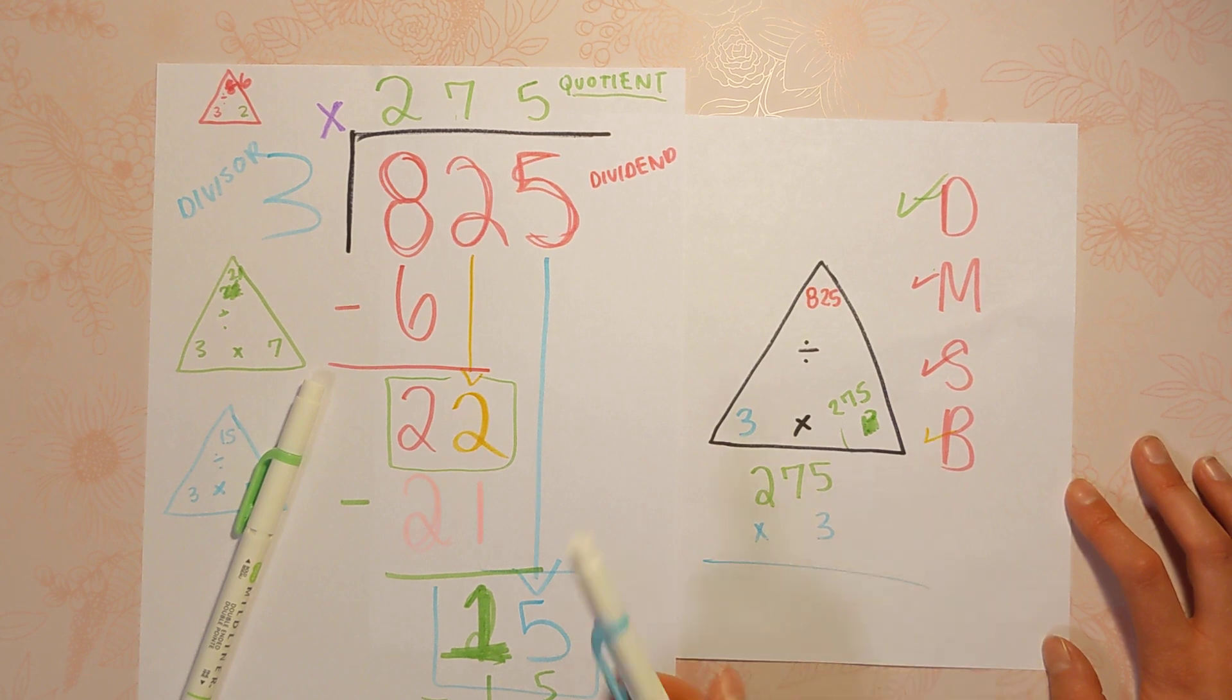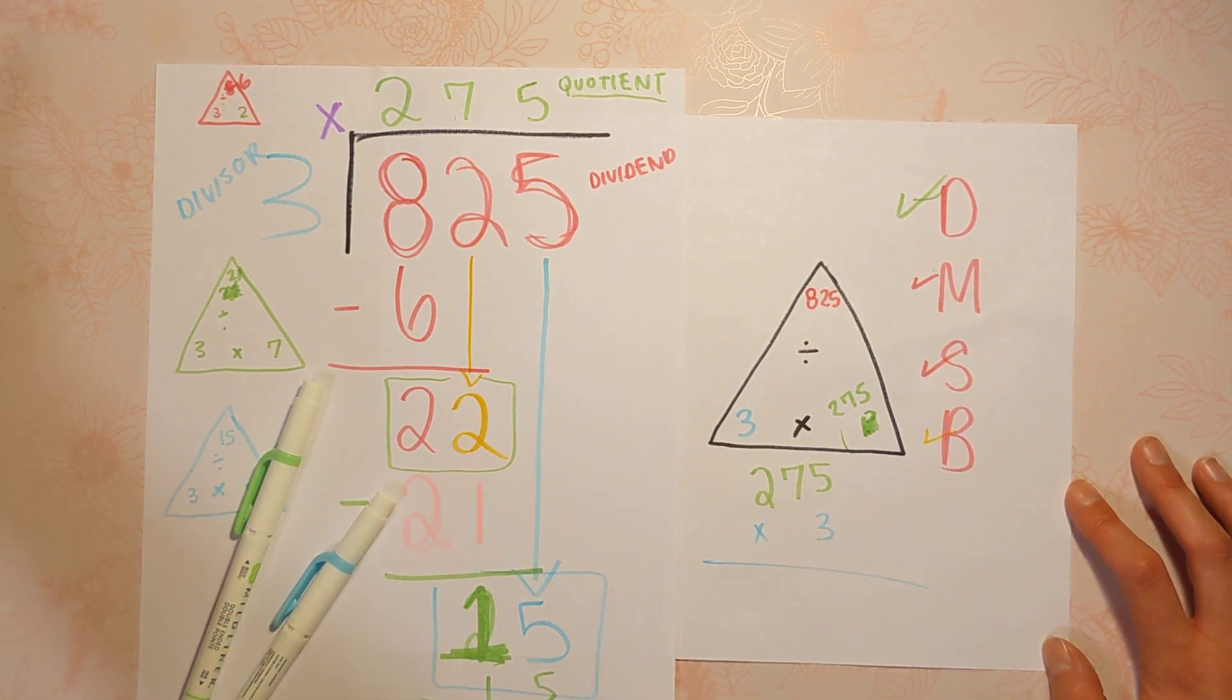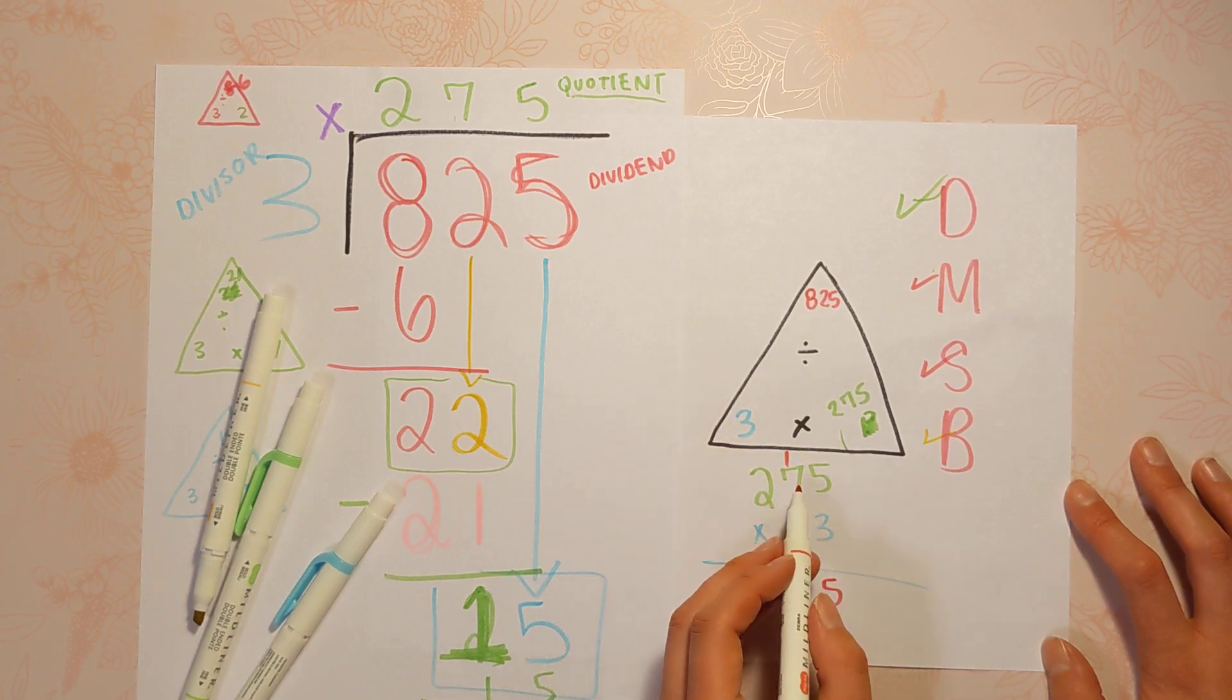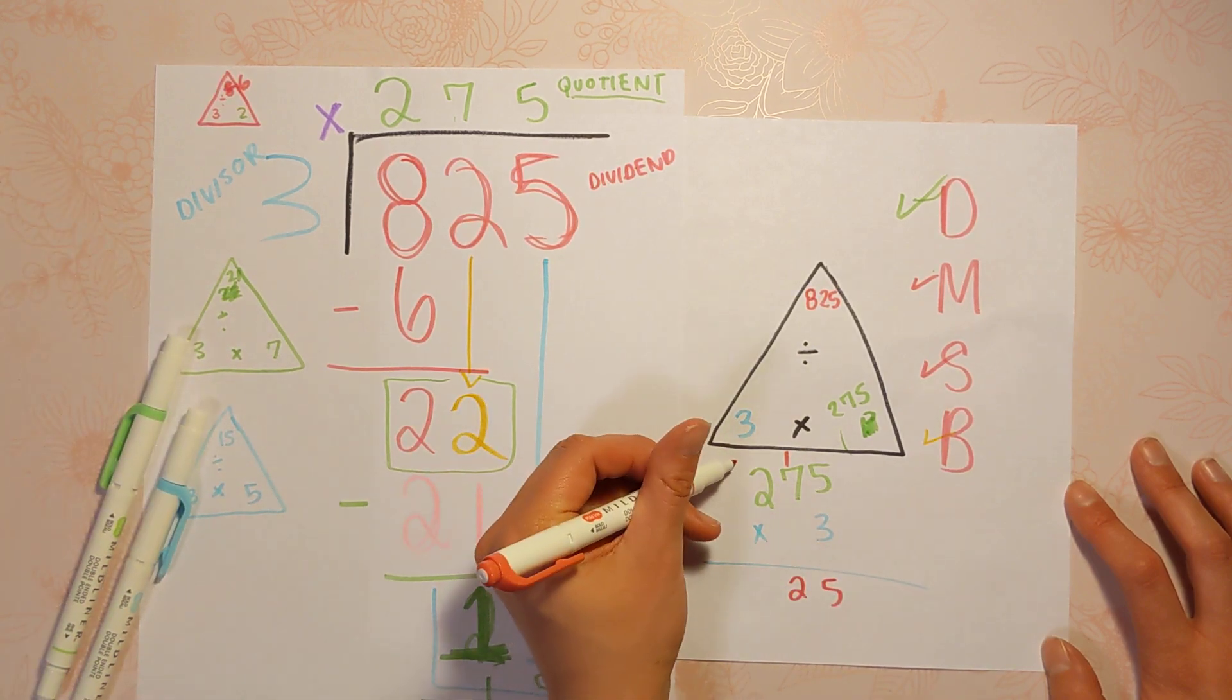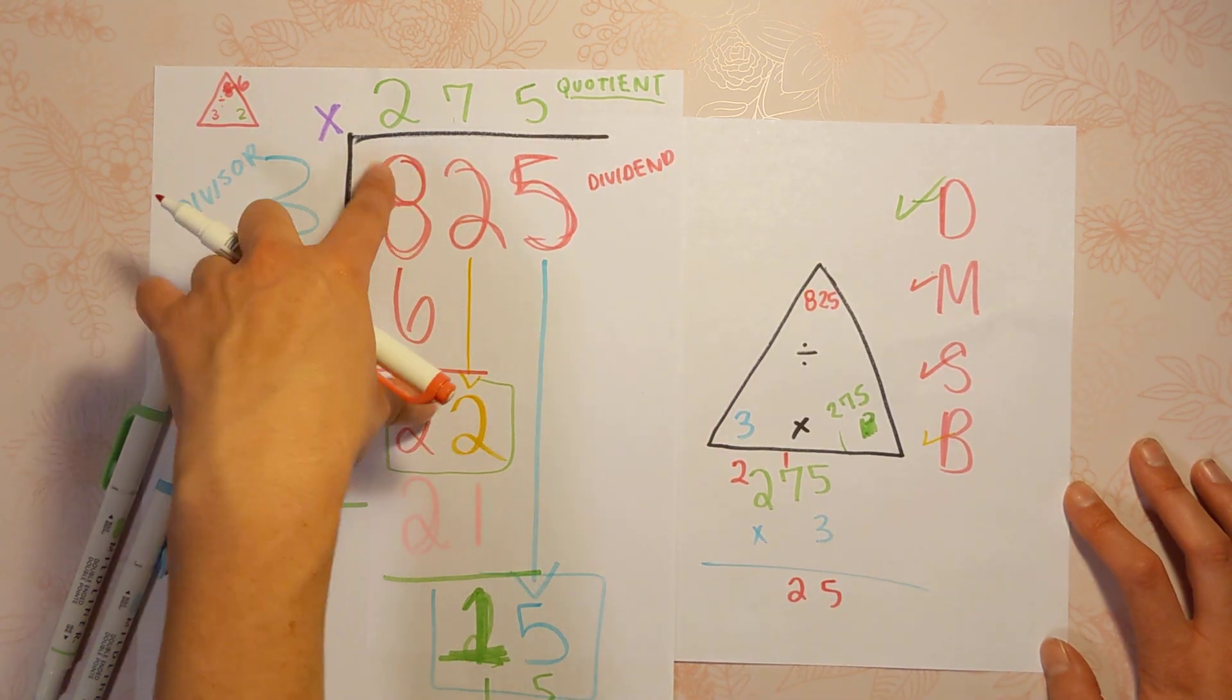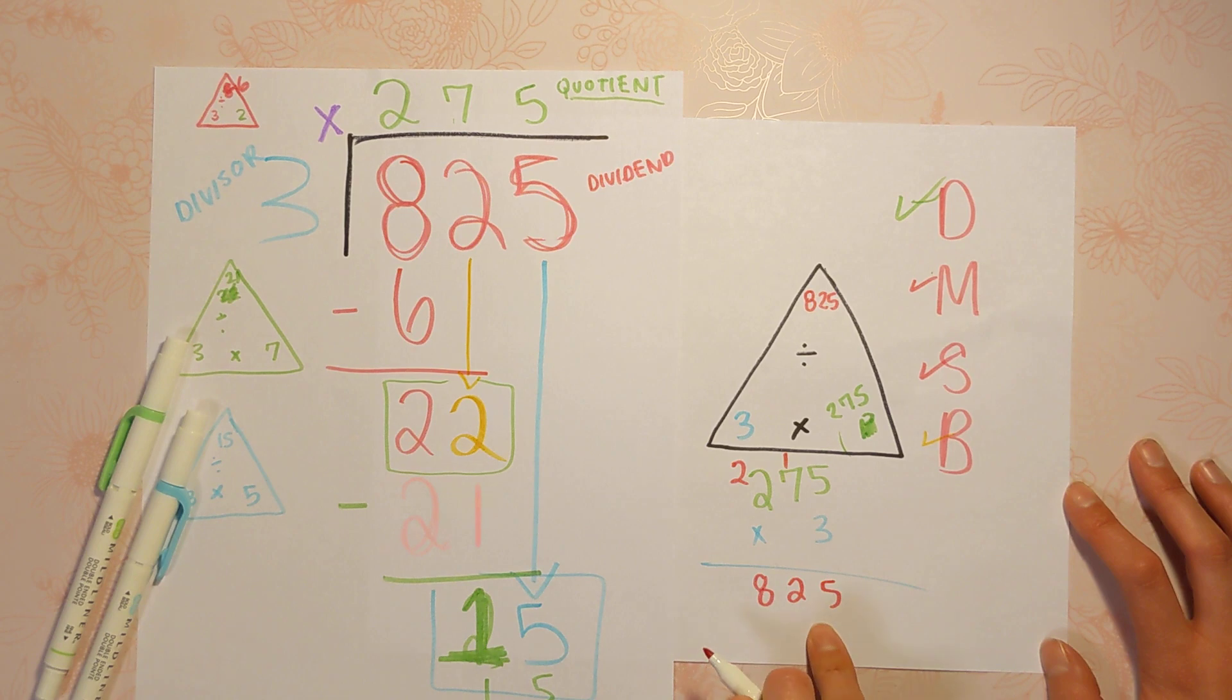You're going to multiply and see if you get that. 275 times 3. You can do this in a variety of ways. I'm going to use the standard algorithm today. 3 times 5 is 15. 3 times 7 is 21 plus 1 is 22. 3 times 2 is 6 plus 2 is 8.